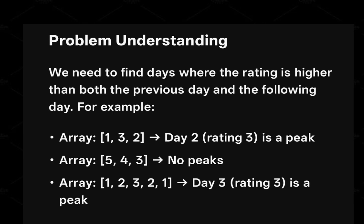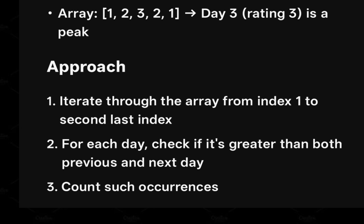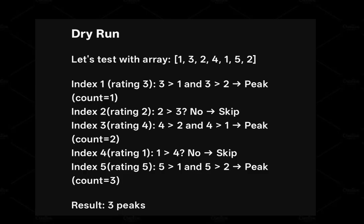Now let's see the approach for this problem. First, you have to iterate the array from index 1 to the second-last index. We start at index 1 because index 0 has no left neighbor. We stop before the last index because it has no right neighbor. For each day, we check whether it is greater than both the previous and next days, and based on the result we count that element. Looking at the dry run will help you understand this.